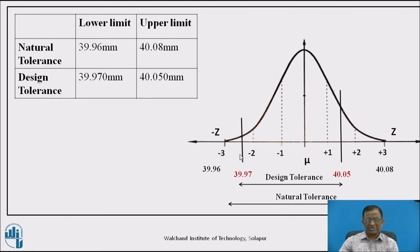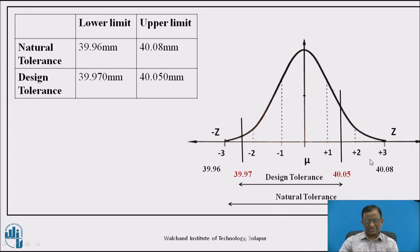The design tolerance has a lower limit of 39.97 mm and an upper limit of 40.05 mm. The designer expects variation only within these limits for functional acceptance; anything outside is rejected. Comparing the two: since the natural tolerance range (39.96 to 40.08 mm) is wider than the design tolerance range (39.97 to 40.05 mm), shafts with dimensions from 40.05 to 40.08 mm will not be accepted and will be rejected.